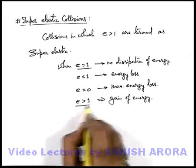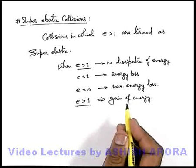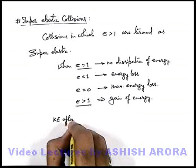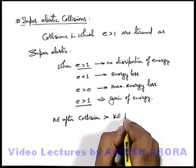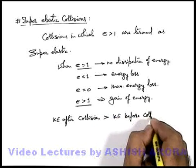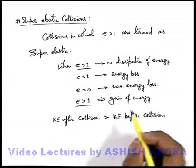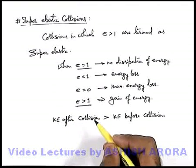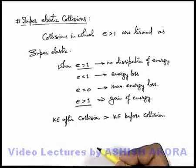So whenever the coefficient of restitution is more than 1, during collision some energy gain will take place. Kinetic energy after collision of bodies will be more than kinetic energy before collision. As we have studied in case of elastic collision, at the time of maximum deformation, kinetic energy is stored in the form of potential energy, which is maximum at the time of maximum deformation, and later on it is completely released, because of which final kinetic energy is equal to initial kinetic energy.